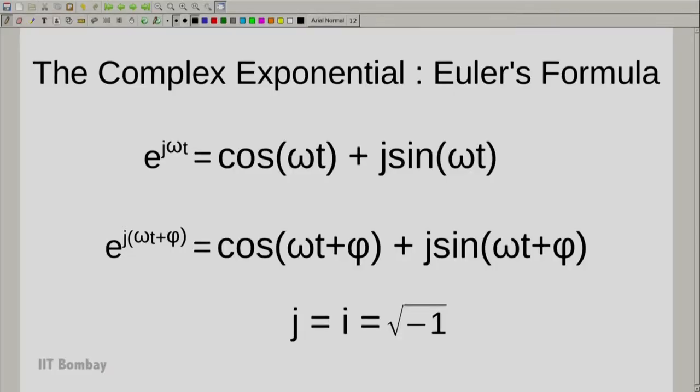So this is the complex exponential, this is Euler's formula and very simple formula and of course we can add phase as well. So you can see in the second case we put e raised to the power of j times omega t plus phi and that looks like cos of omega t plus phi plus j times sine omega t plus phi.